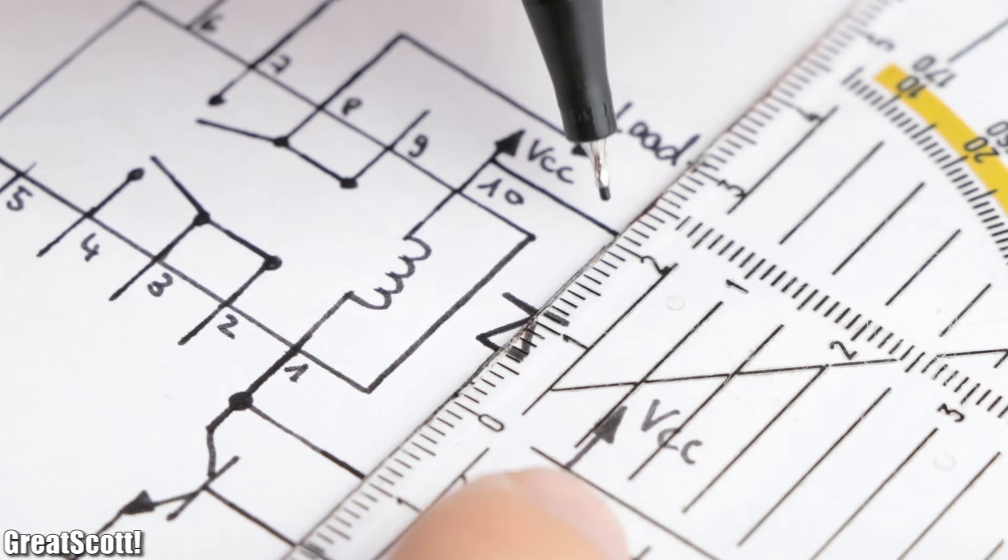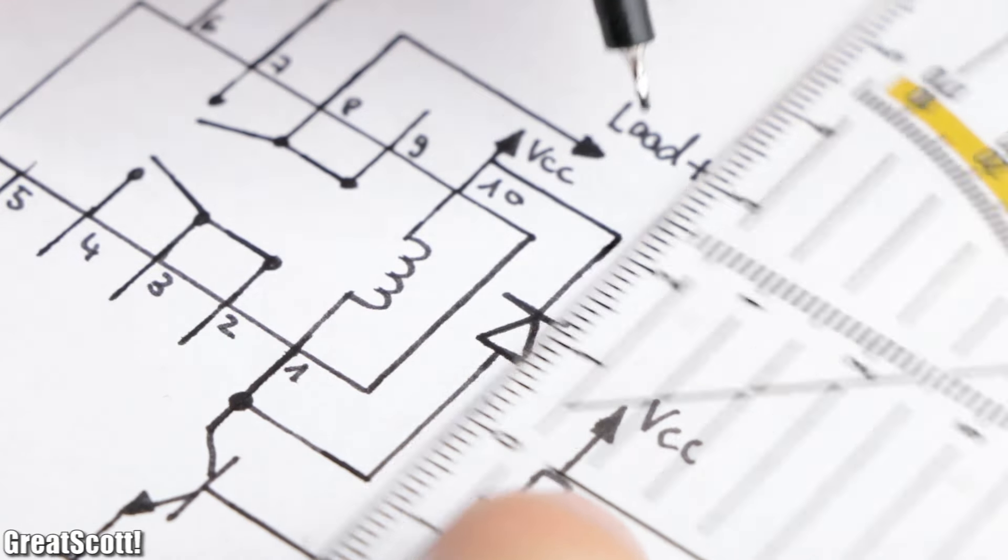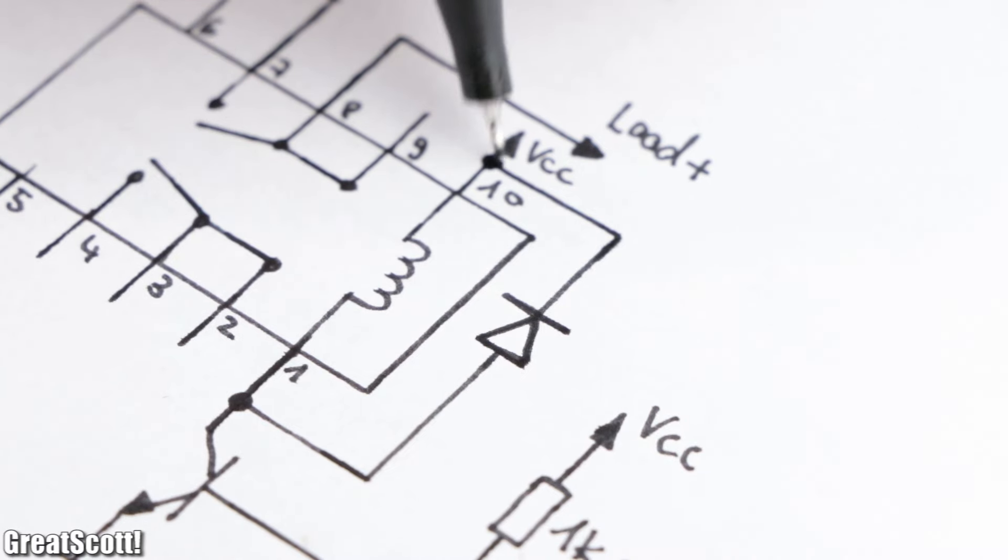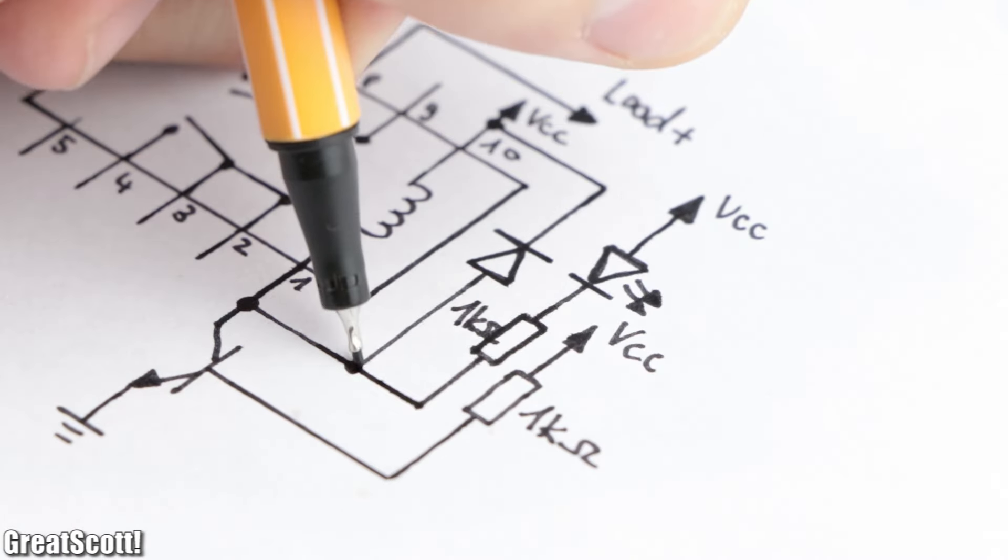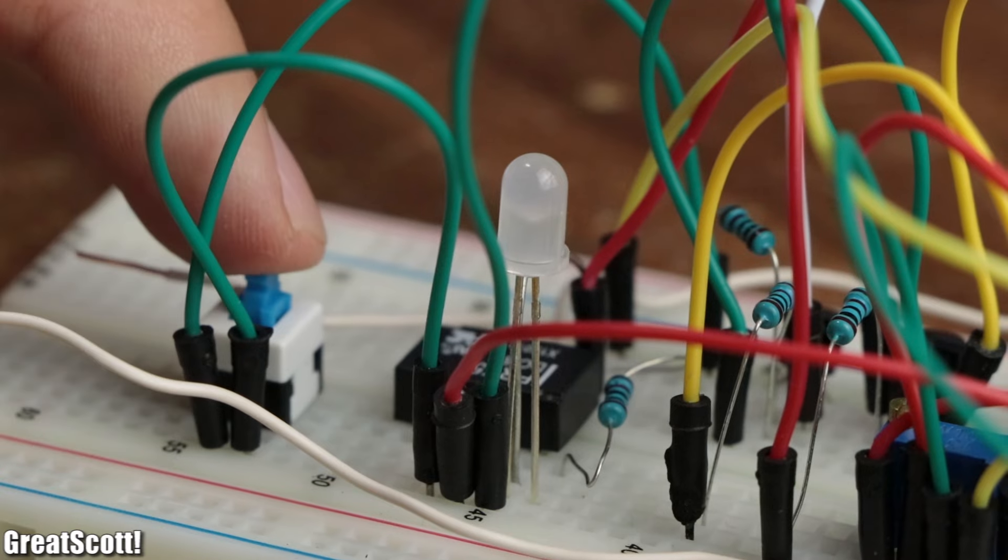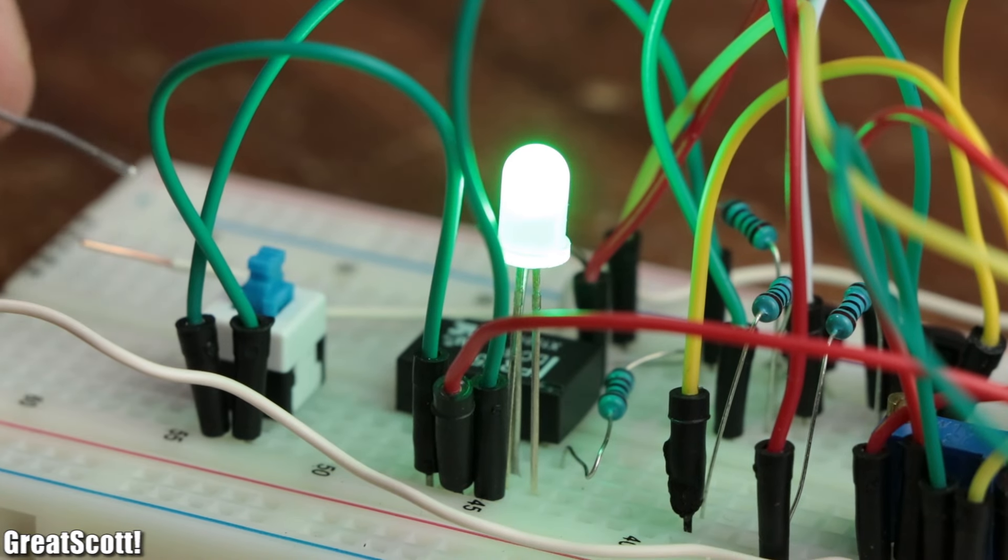Of course, we should not forget to add a flyback diode to prevent overvoltages at the collector. And it is also a good idea to add a green LED with current limiting resistor in order to visually see when there is no overcurrent problem.